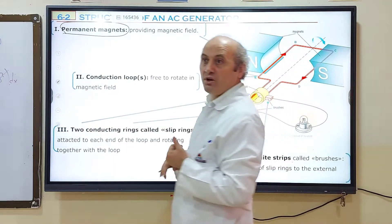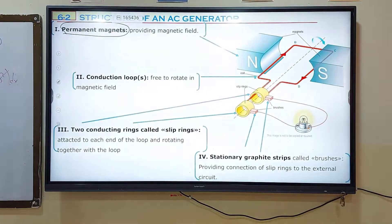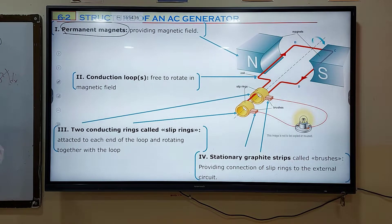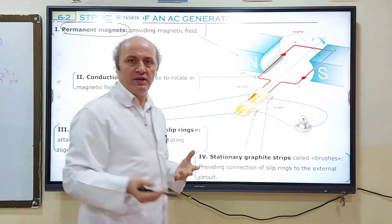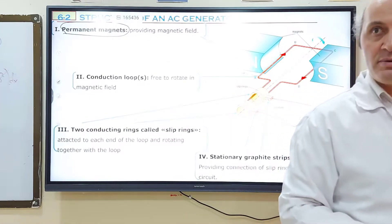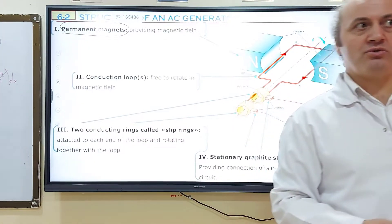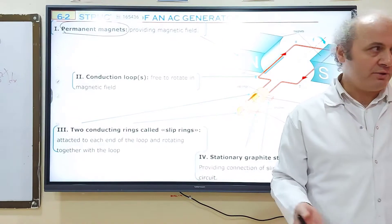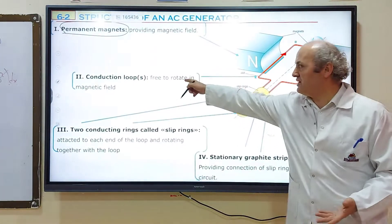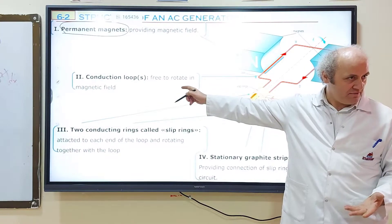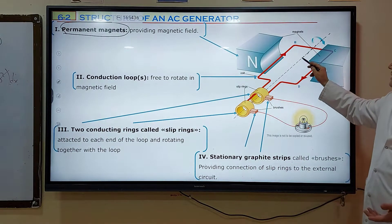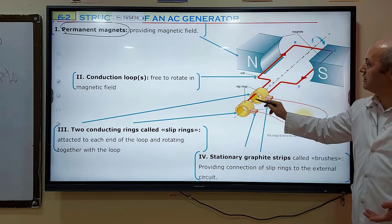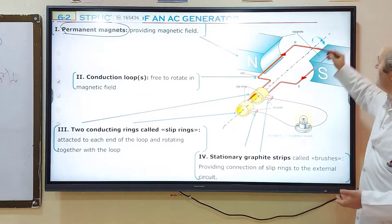The second component is we need loops — a single loop for an experiment, or several loops for a coil. This conducting loop must be free to rotate, because we need to change the magnetic flux. If the loop is able to rotate, we can change the magnetic flux. The dashed line represents the axis of rotation, about which the loop rotates.